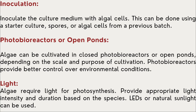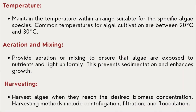During the inoculation process, we need to inoculate the culture media with algal cells. This can be done using starter culture spores or algal cells from a previously cultured batch. Photobioreactors or open ponds are usually used to culture algae. Light: some algae require light for photosynthesis, and hence we need to provide intense light — LEDs or natural sunlight are used as a source. The temperature range is between 20 to 30 degrees Celsius. We need to provide aeration by mixing so that the algae are exposed to nutrients and light uniformly; this prevents sedimentation and enhances growth.